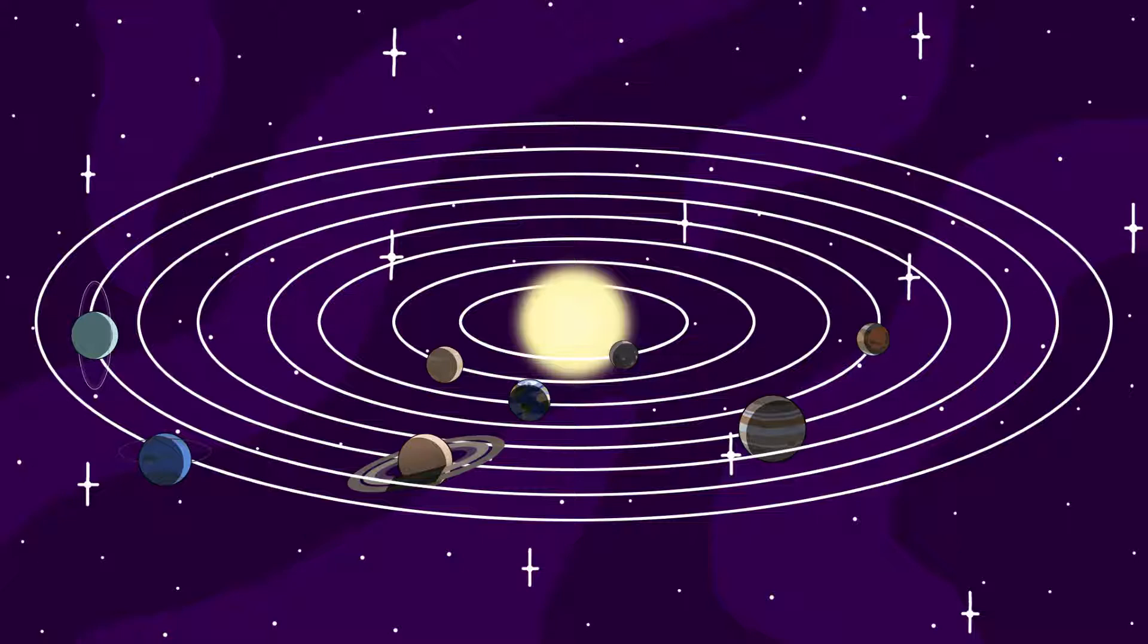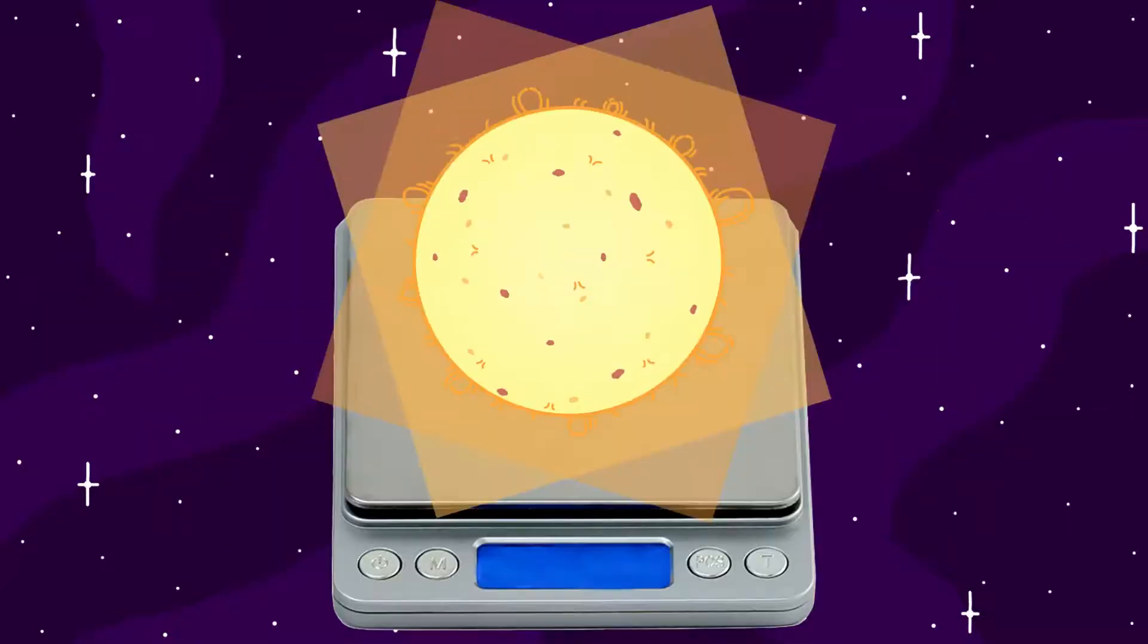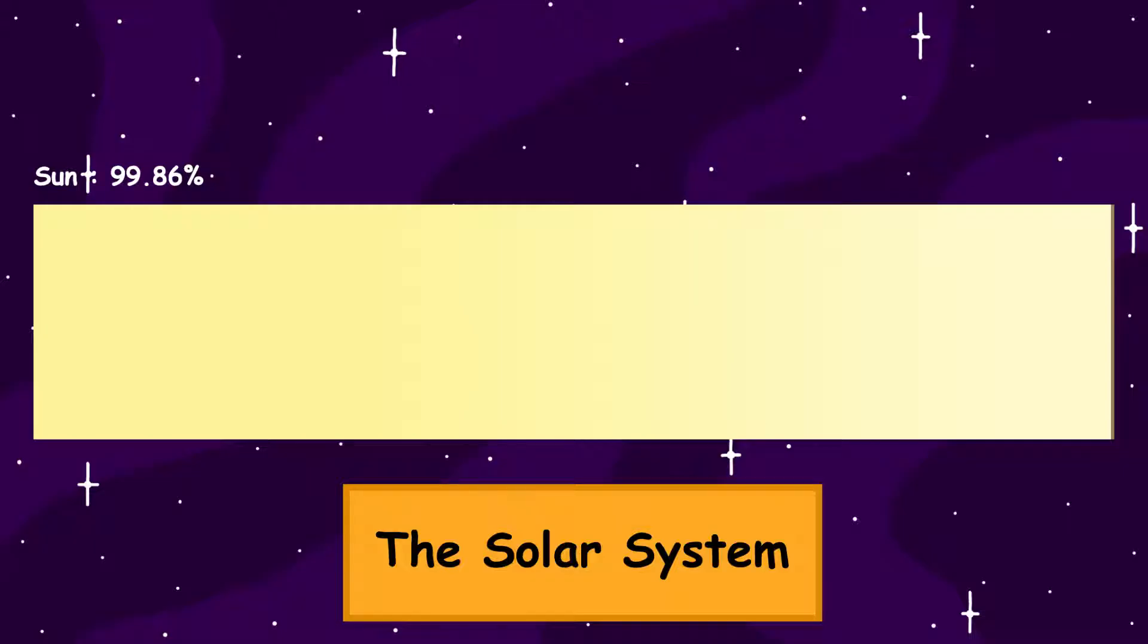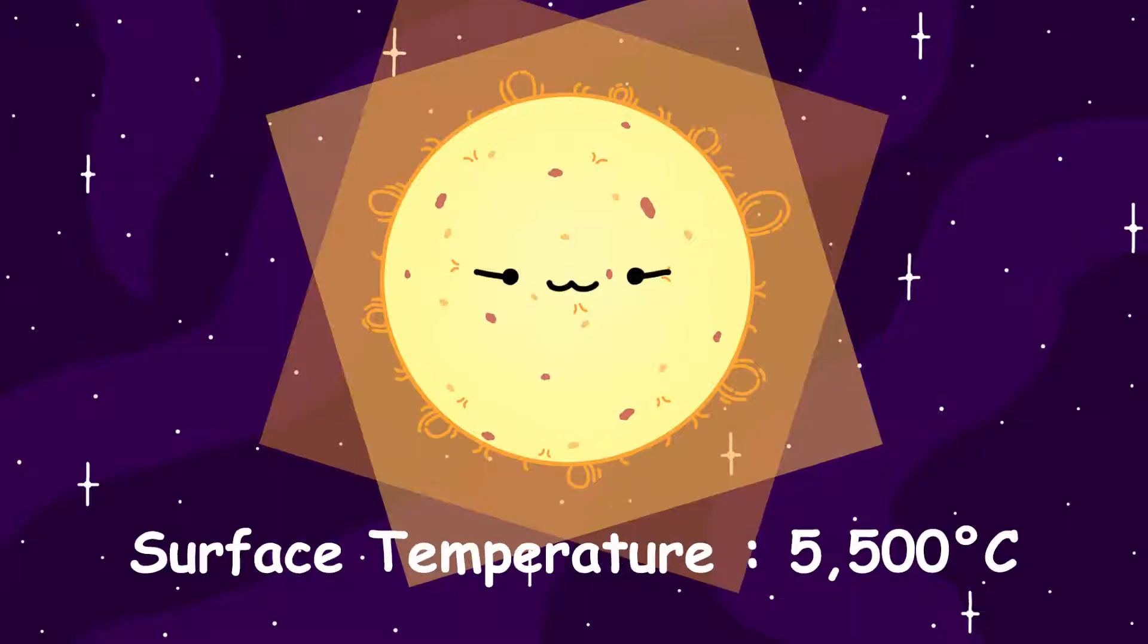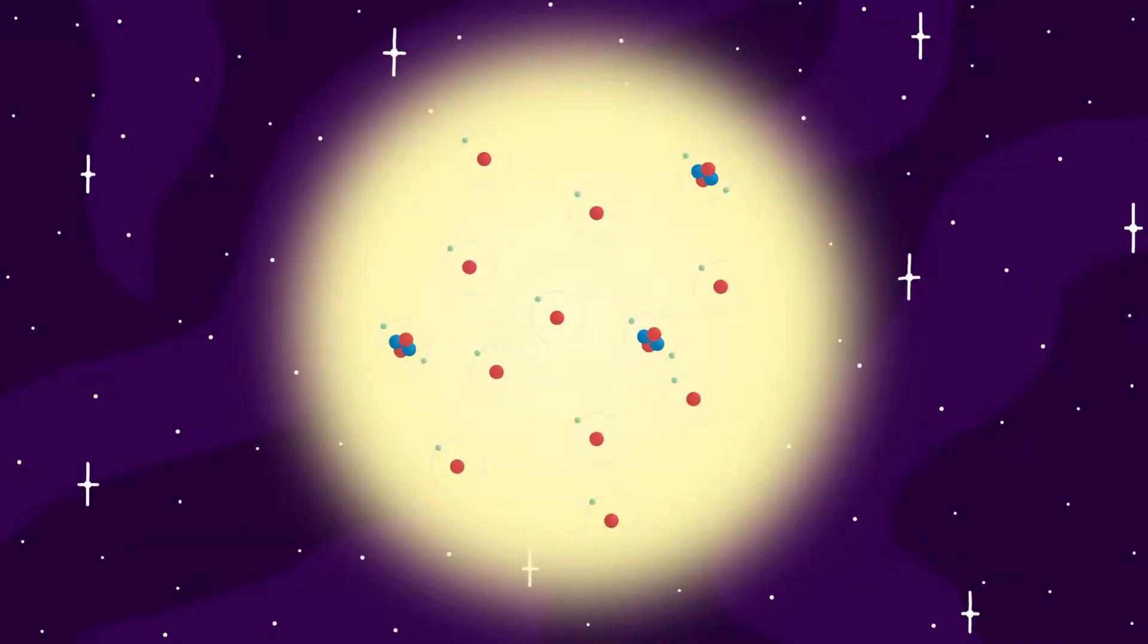At the center of the solar system, we have the sun. The sun is very massive, containing 99.86% of the mass of the entire solar system. The sun has a radius of 696,340 kilometers. It has a surface temperature of over 5,500 degrees Celsius and is mainly made of hydrogen and helium.